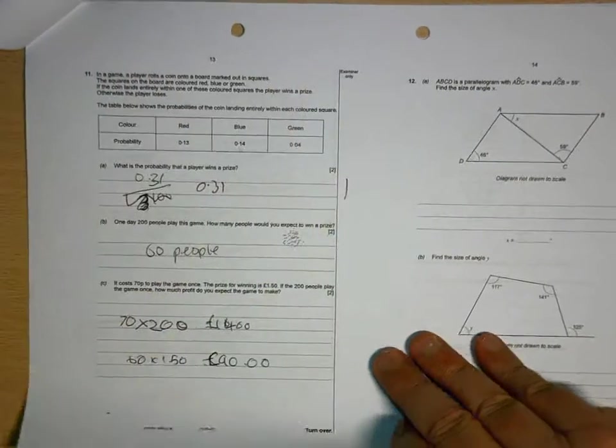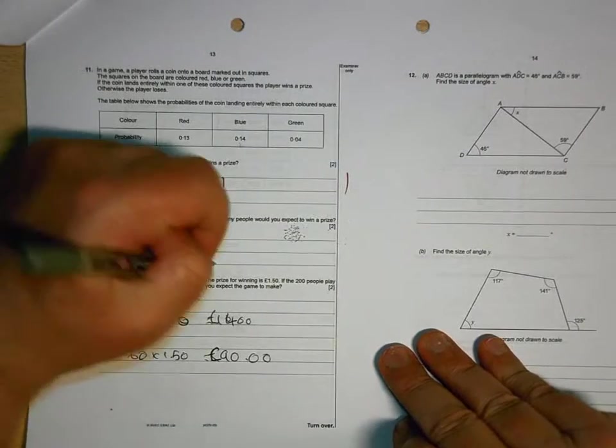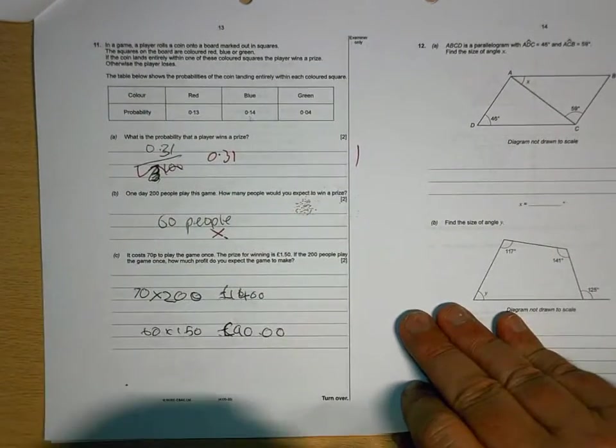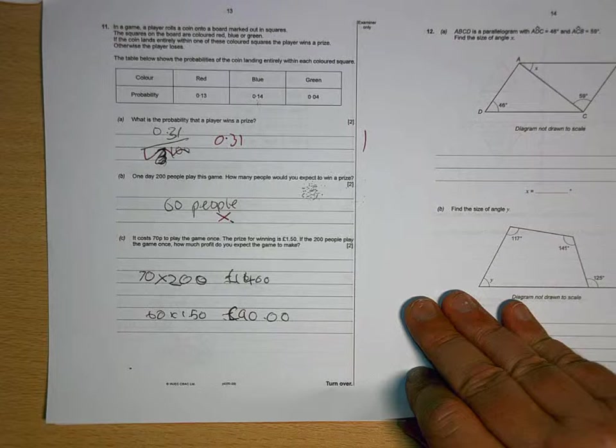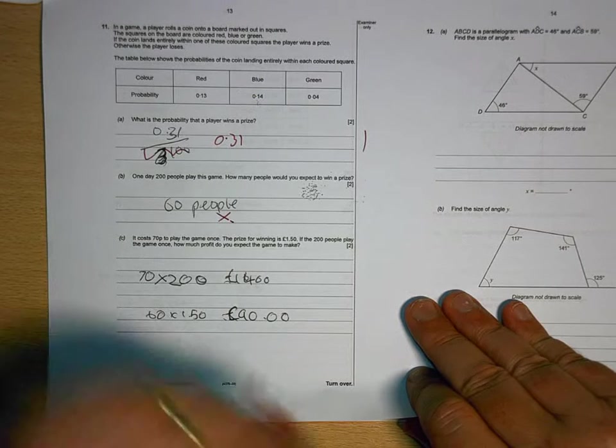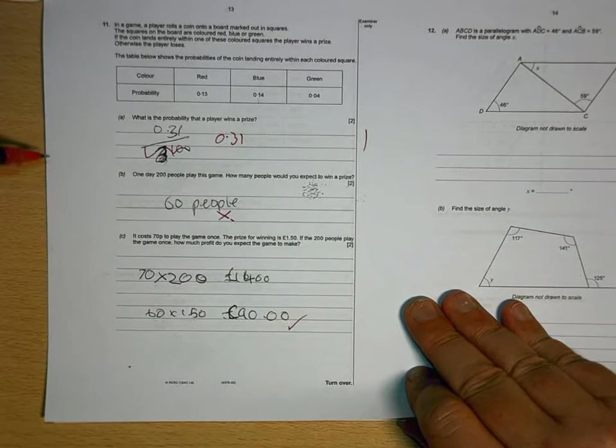You don't need to put it out of 100. It's just 0.31. You lose a mark for trying to put it out of 100. It isn't 60. It's 62.